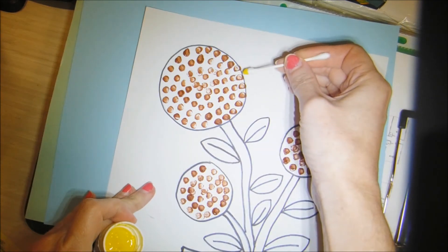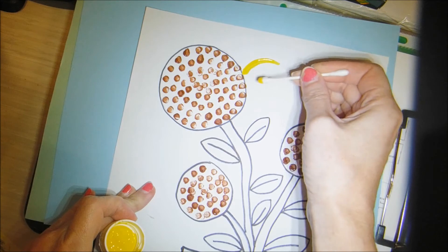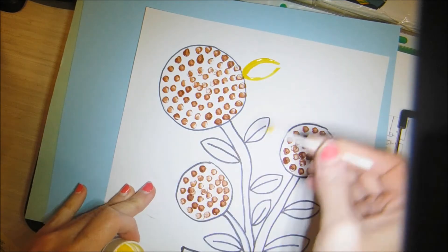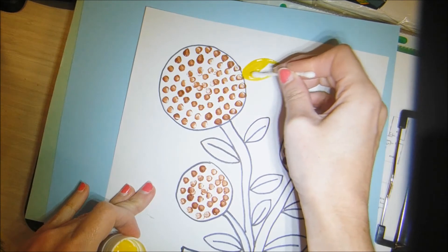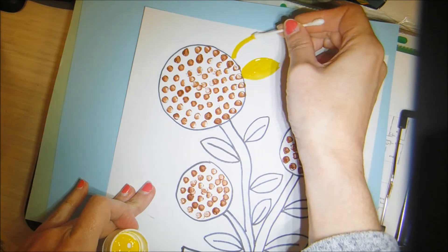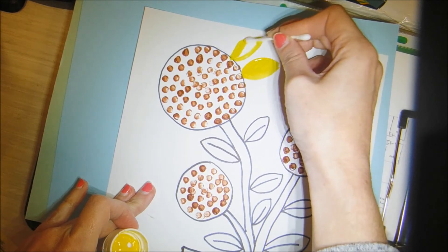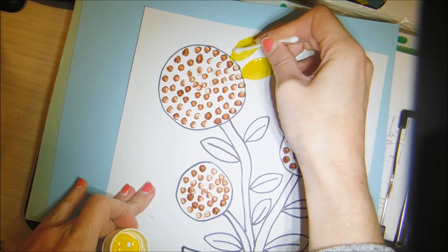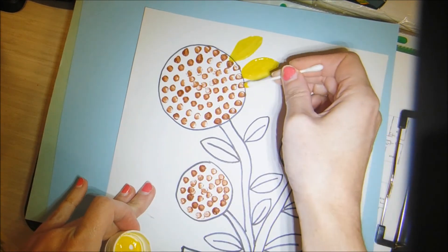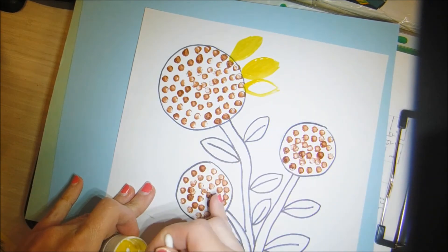To make petals, it's kind of the same thing, the same way as we made our leaves. So one curve this way and another curve this way and then you can just fill it in. You're going to do this all the way around the outside of the sunflower and you're going to do this to every single sunflower.